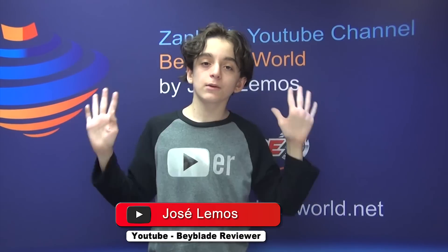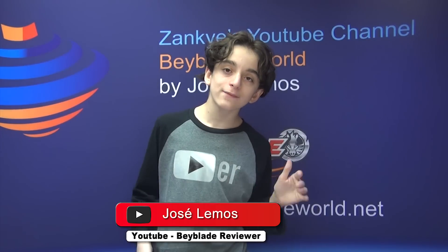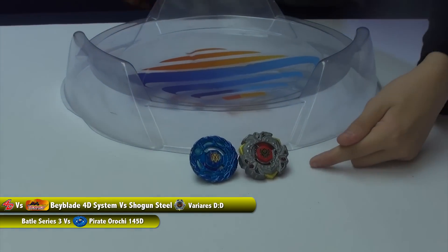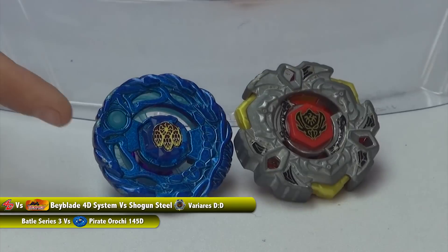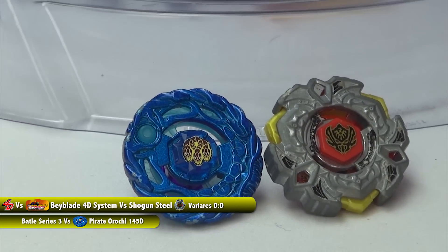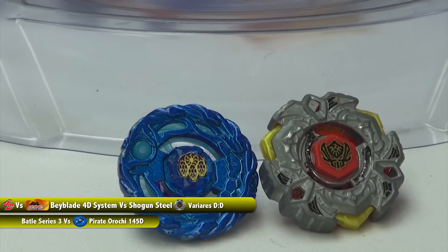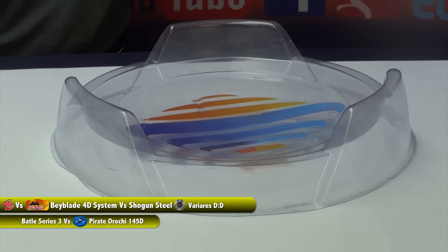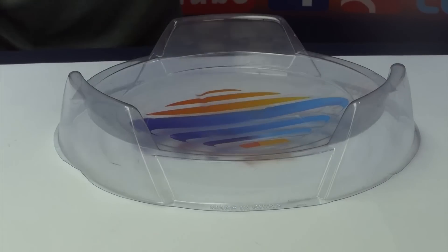Hi, this is José Lemos from BeybladeWorld.net. This series is called the Beyblade 4D versus Shogun Steel Vary Series Battle Series, Battle 3. So we're on our third match. We got King versus Ace, so Pirate Orochi versus Varyseris. As we can see, our battles will be in the Attack-type BeyStadium, three to five rounds, one round for the fans.